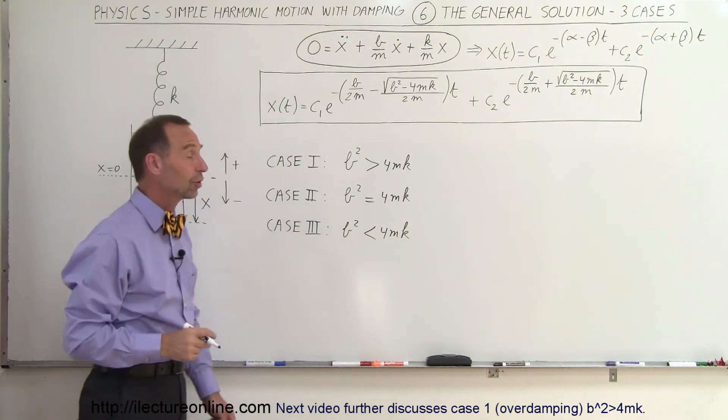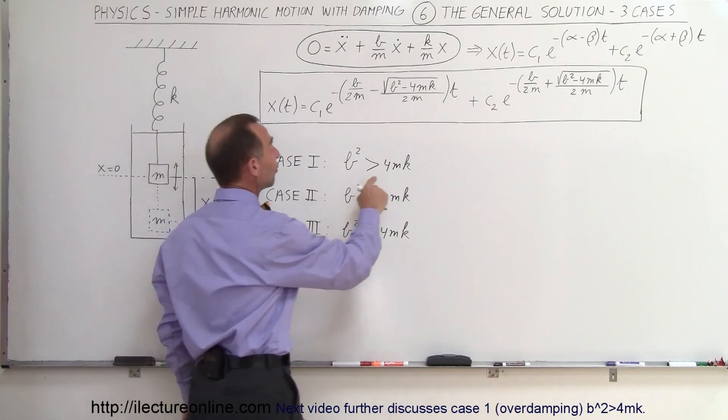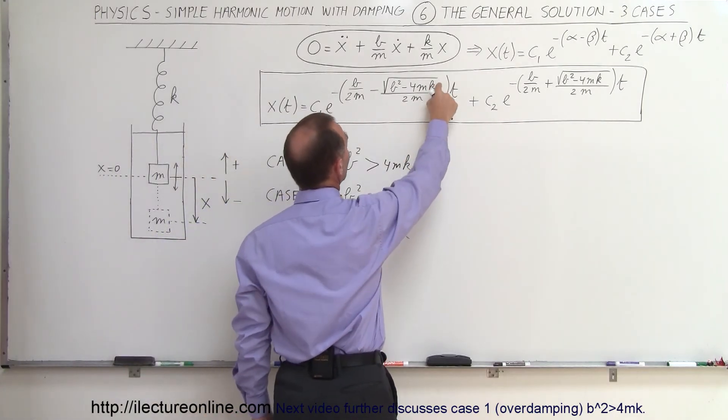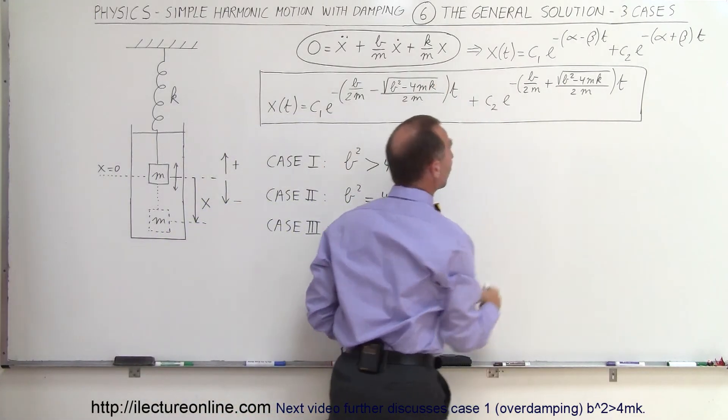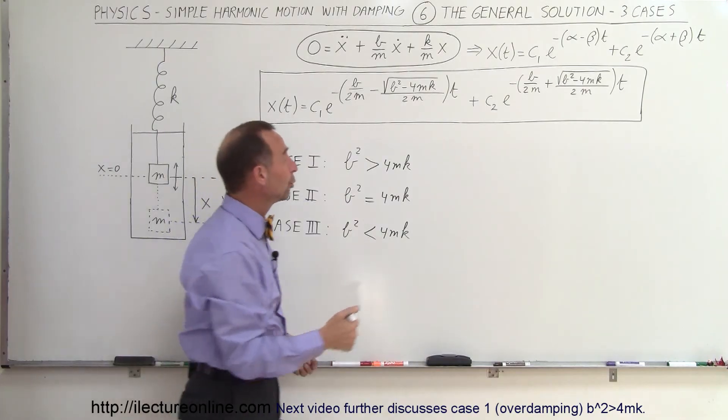So let's take a look and see what would happen in each of those cases. If B squared is greater than 4MK, then this would be a real quantity, and you have two real roots.